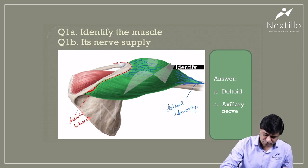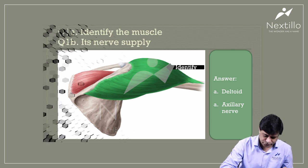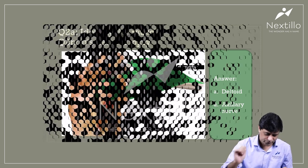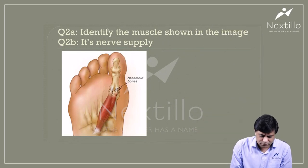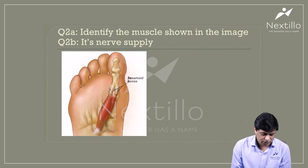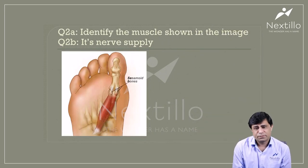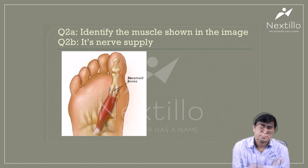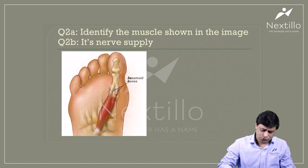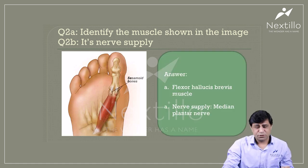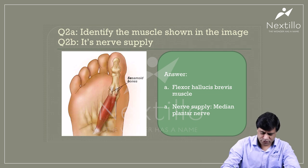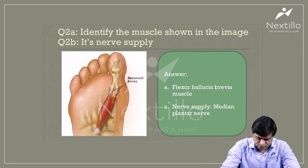Now let's move to question number two: identify the muscle shown in the image and its nerve supply. This muscle here is the flexor hallucis brevis muscle.